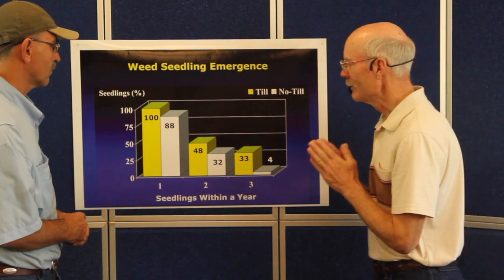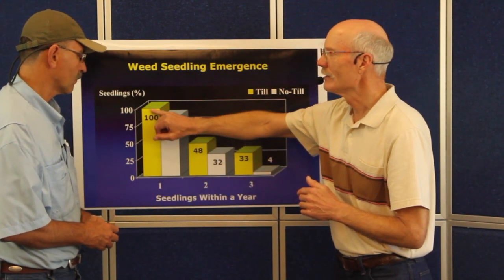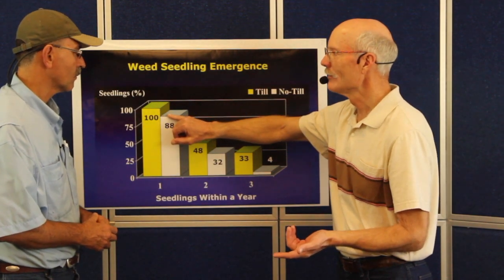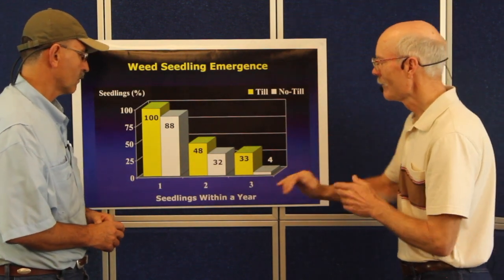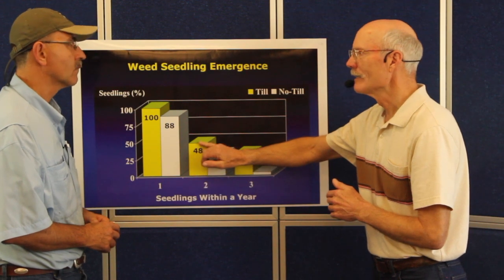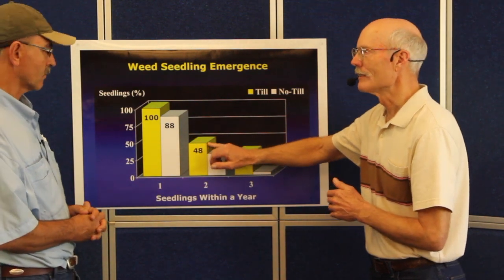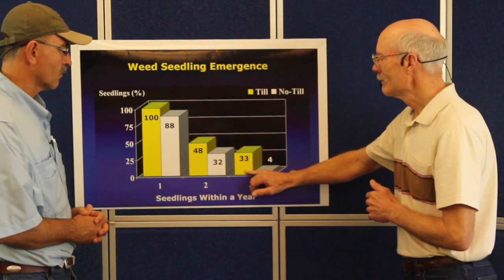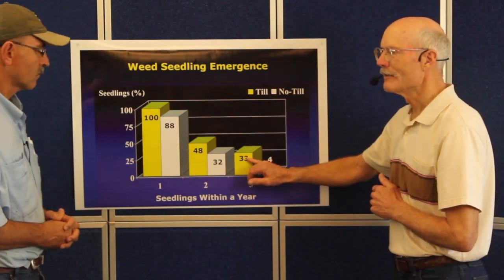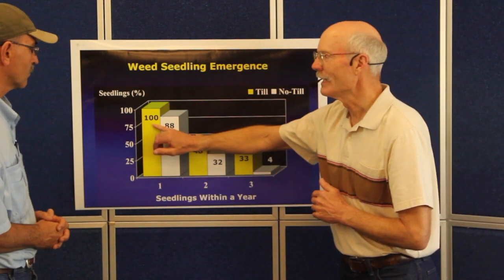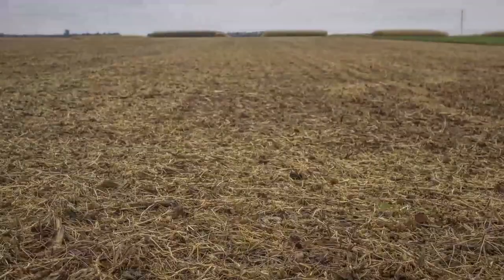The second point is the difference between the two bars. In the first growing season, the yellow bar — tilled — had 100 seedlings, and we had 88 in no-till. So from a management perspective, that's really no benefit at all; they're about the same density. In the second growing season, we got 48 seedlings in the tilled and 32 in the no-till — we're starting to see some difference. In year three, we had 33 seedlings in the tilled but only four in no-till. That difference is an eight-fold difference in year three, whereas in year one we had no difference. The key point is no-till is a benefit for weed management, but it takes time.